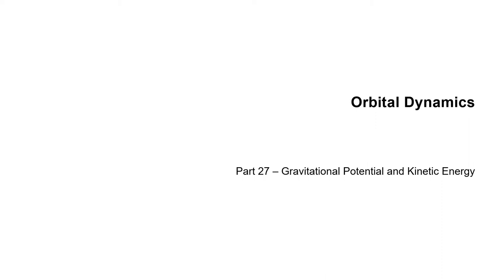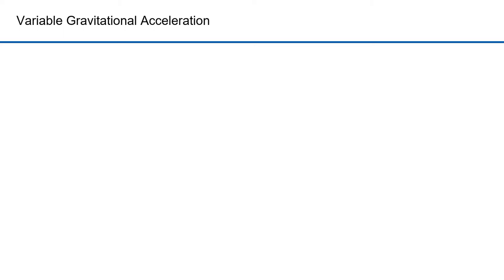Welcome to orbital dynamics part 27. In this part I'm going to talk about potential and kinetic energy with a variable gravitational force. In the previous part I used g as a constant gravitational acceleration. Here I want to bring in Newton's gravitational law where the force and thus the acceleration changes inversely with the distance from the center of the gravitational force. Near the surface of the earth, gravitational force equals mass times g, and g equals minus 9.81 meters per second squared.